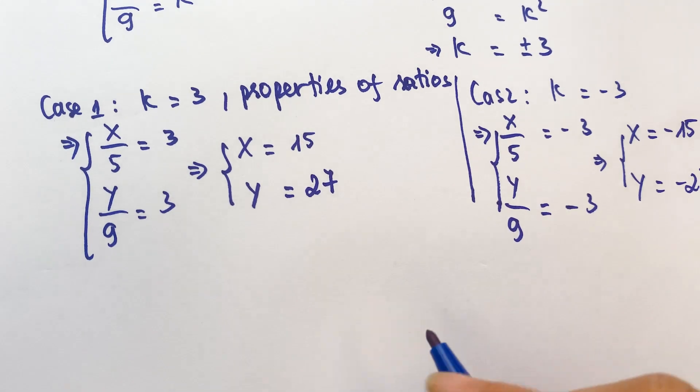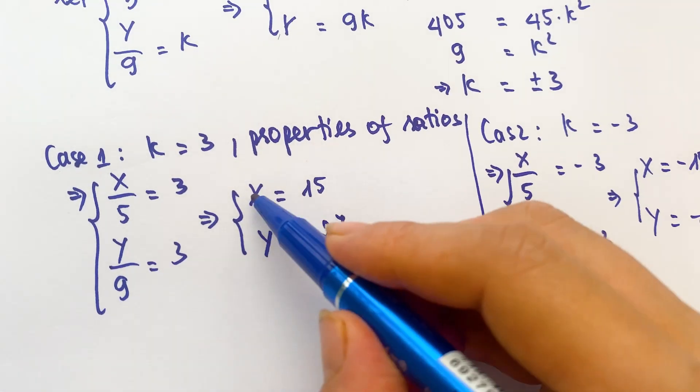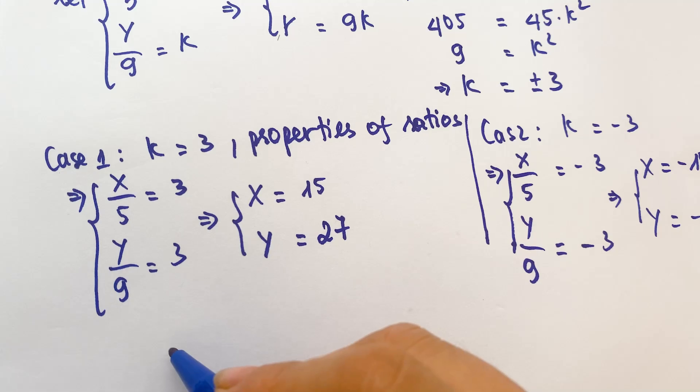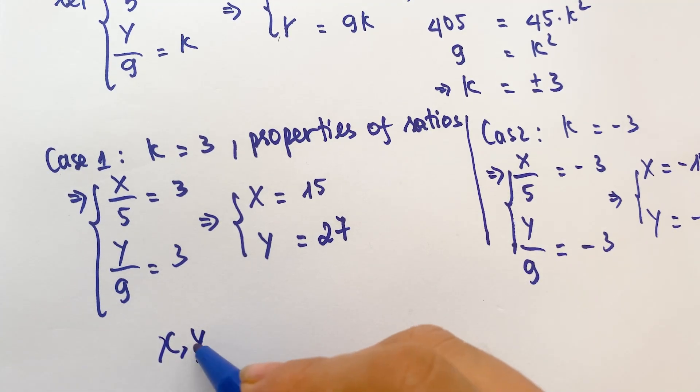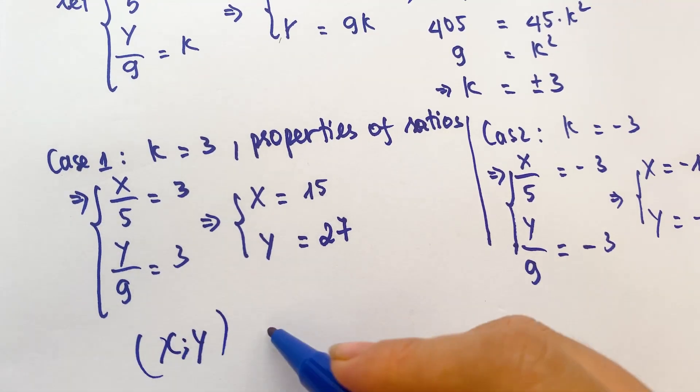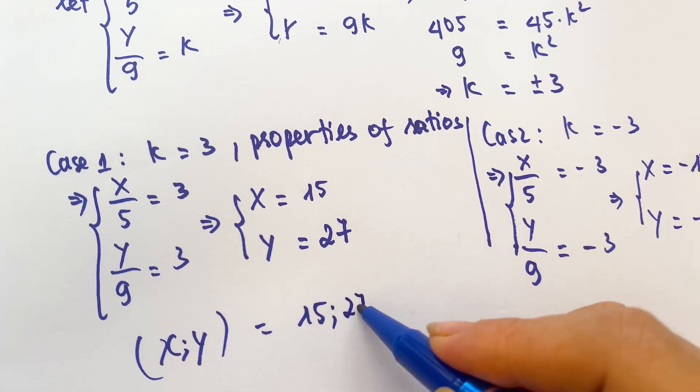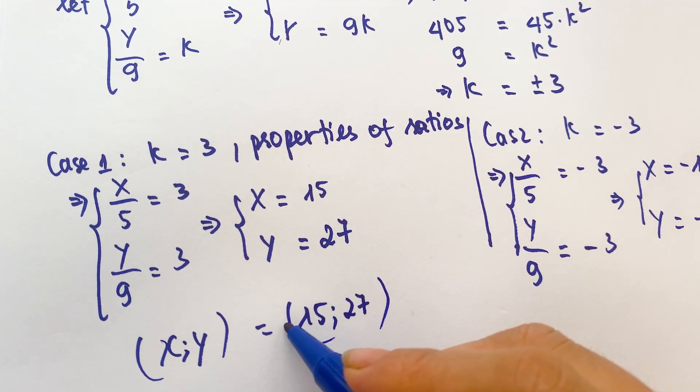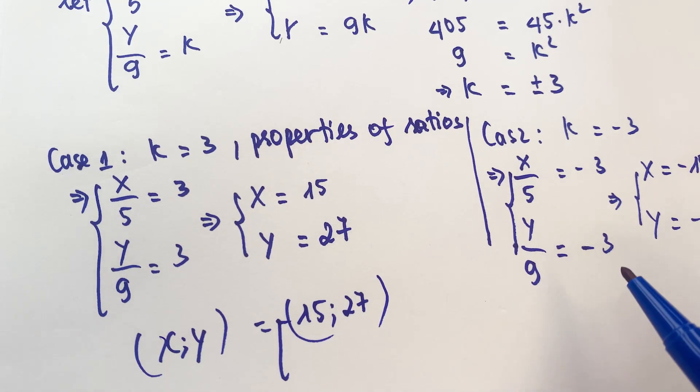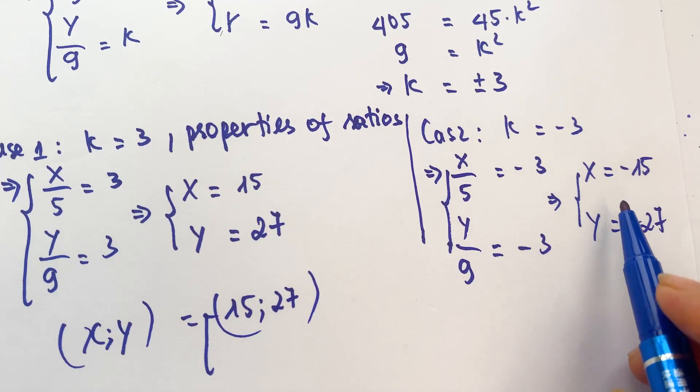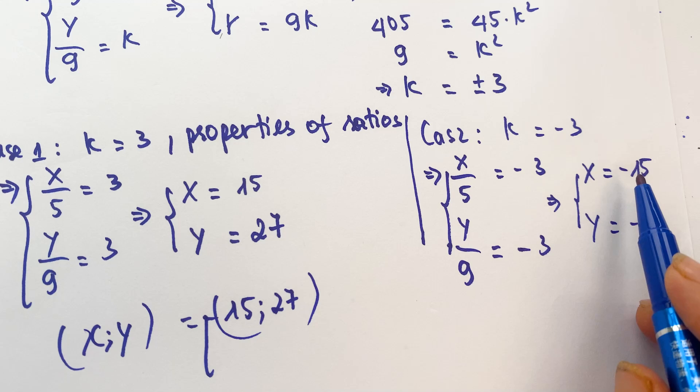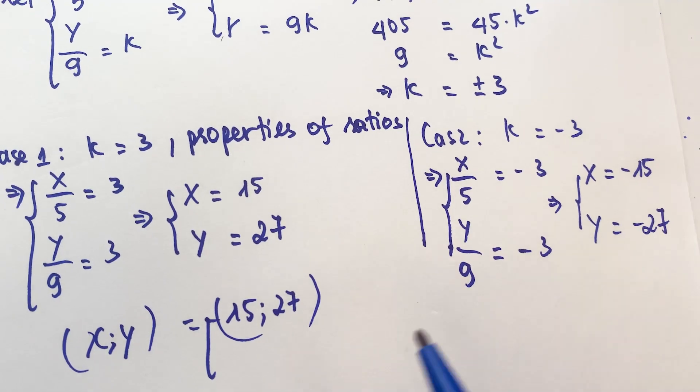And so, we can have two pairs of x and y. Firstly, (x, y) equals (15, 27). And secondly, you can have (x, y) equals (minus 15, minus 27).